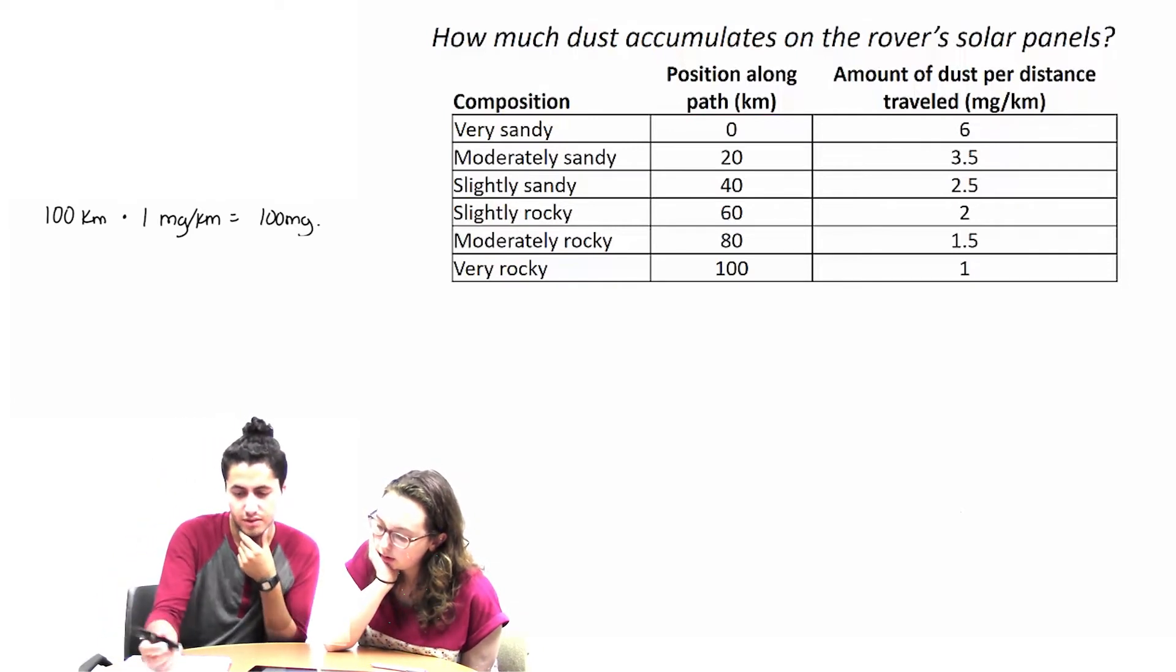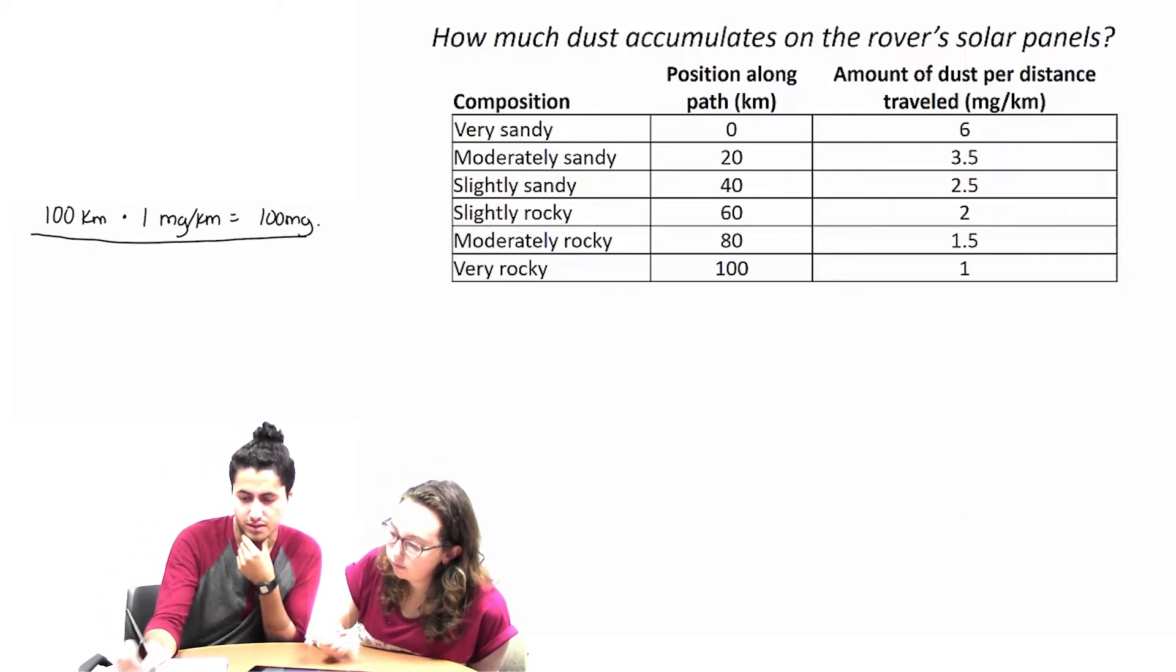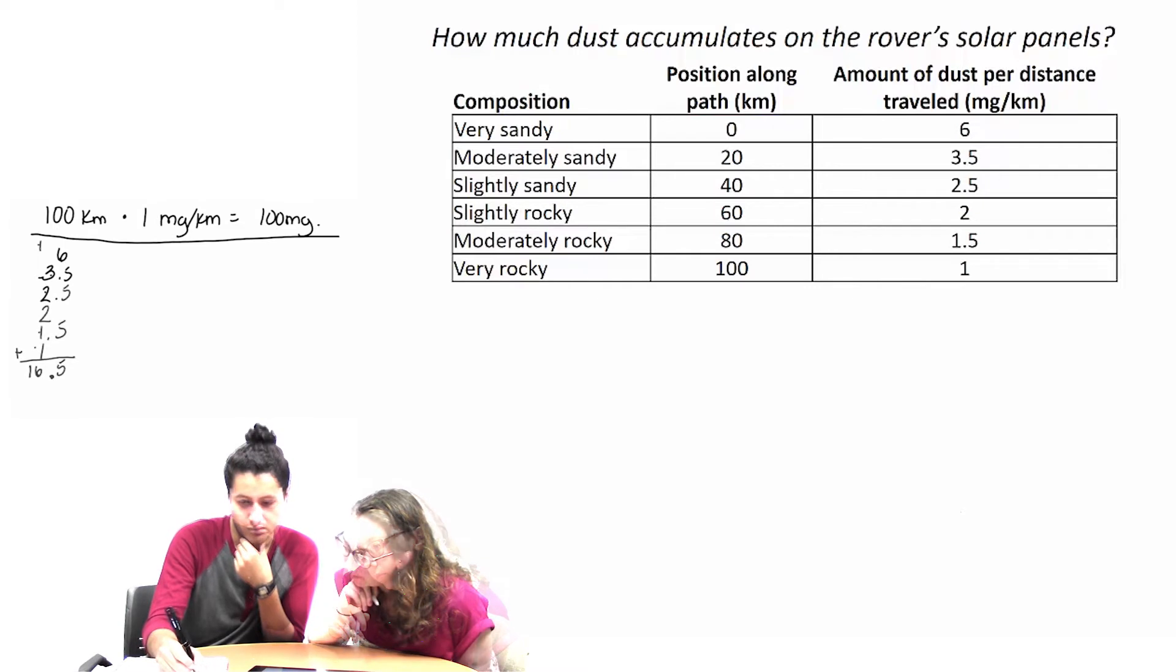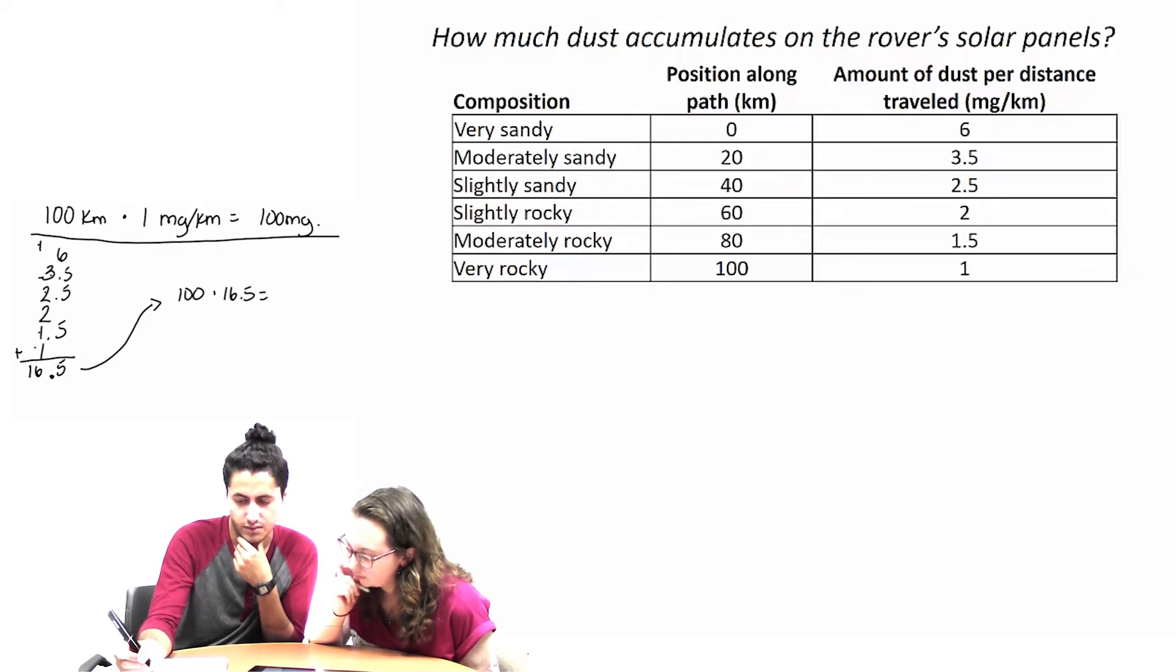So then you're saying let's do 6 plus 3.5 and then we're going to take that and do 100 times 16.5. So 165 milligrams. Seems reasonable.